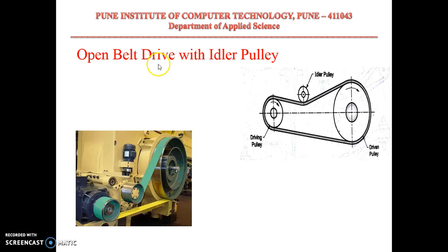Another configuration is an open belt drive with an idler pulley. Here we have a driving pulley and a driven pulley. Over time, the tension in the belt may go down, so in order to increase the tension in the belt, we use an idler pulley, which is also called a jockey pulley. The idler pulley also serves a function of guiding the belt.